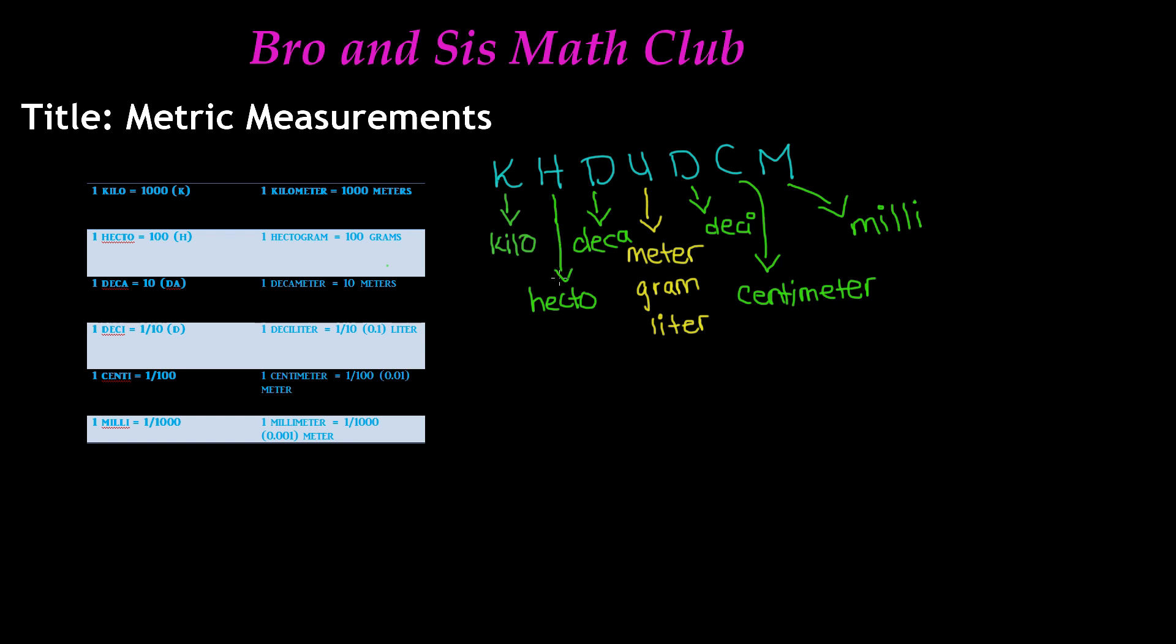Since we know what each prefix means, we can make different metric measurements. Rather than just kilometer, we can have kilogram or kiloliter. Since kilo means 1,000, kilometer means 1,000 meters, kilogram means 1,000 grams, kiloliter means 1,000 liters. The same goes for the rest: hectometer, dekagram, deciliter—you can make different combinations.